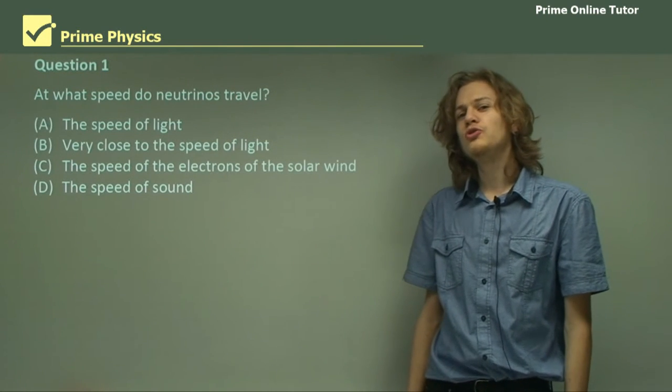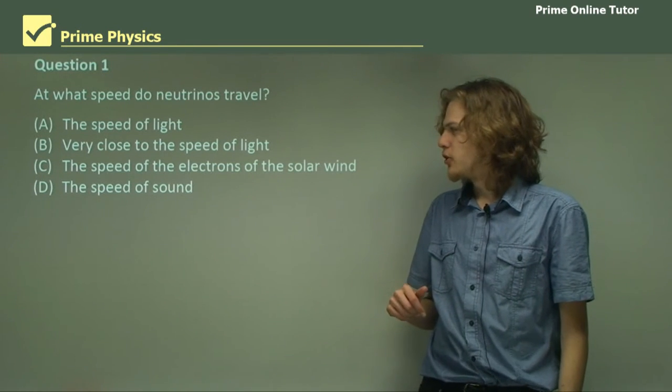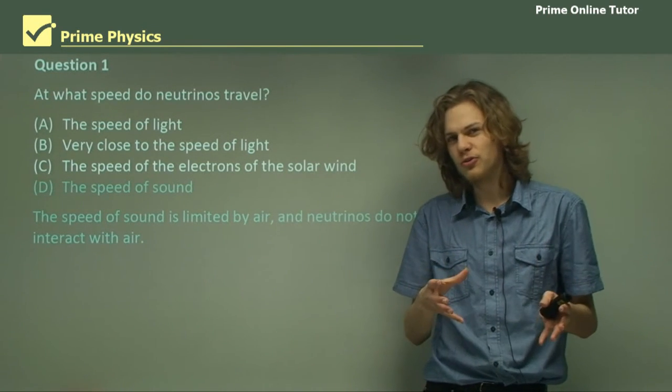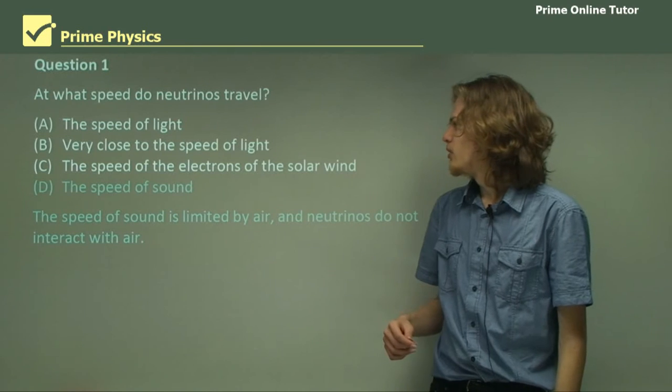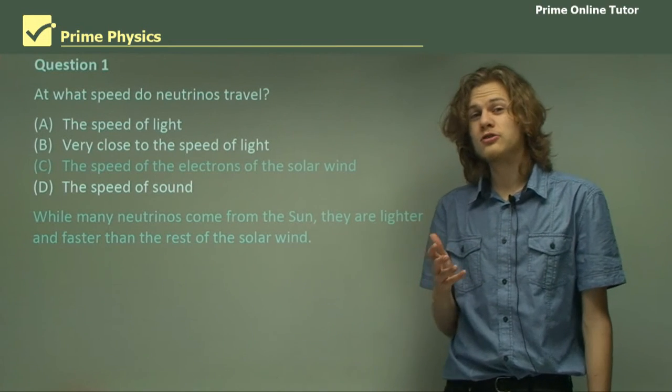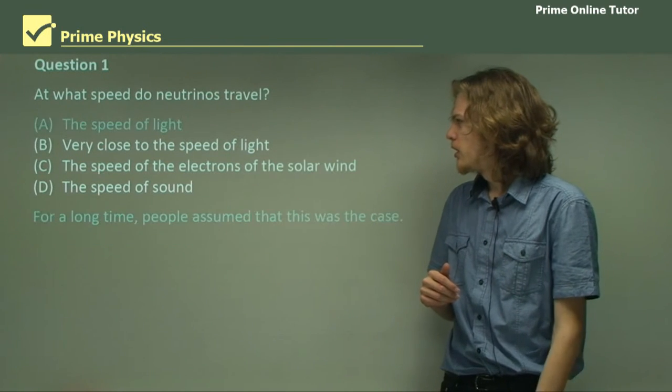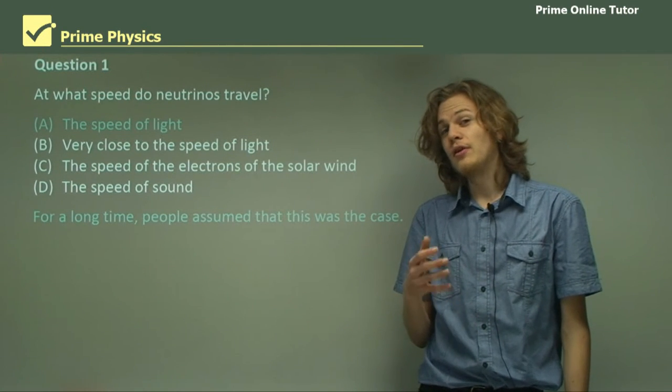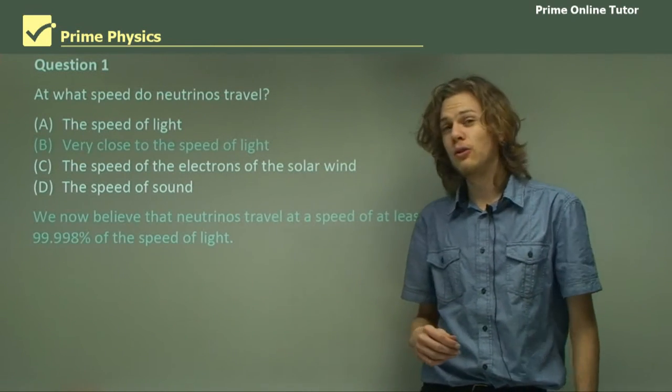Question one: at what speed do neutrinos travel? Remember, this is a question that was in a bit of debate until recently. The speed of sound is way off. Speed of sound is about the speed of air molecules. Neutrinos travel much faster than that. How about the speed of electrons in the solar wind? Even though the solar wind moves at about 400,000 meters per second, it's not fast enough. The speed of light was the working answer until quite recently.